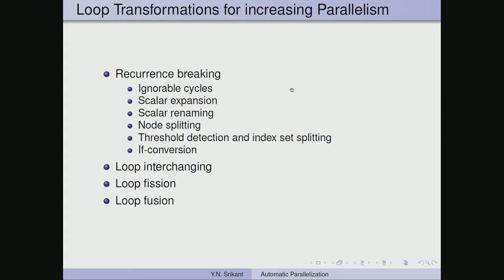Let us look at a couple of transformations which can increase parallelism: recurrence/cycle breaking, ignorable cycles, scalar expansion, scalar renaming, node splitting, threshold detection, index set splitting, if-conversion, loop interchanging, loop fusion, and loop fission. We will look at only a few of these.